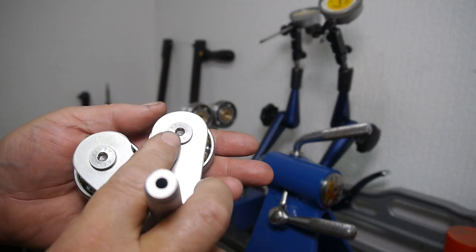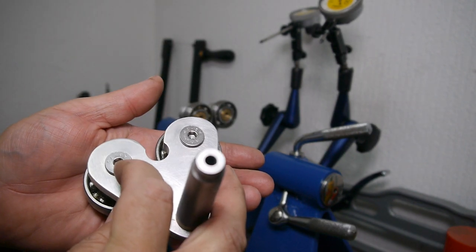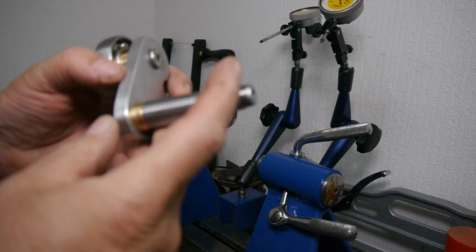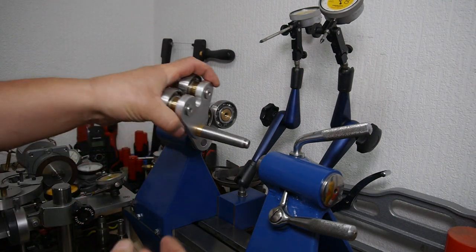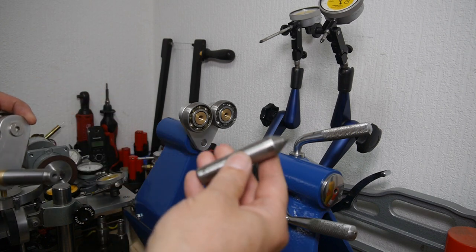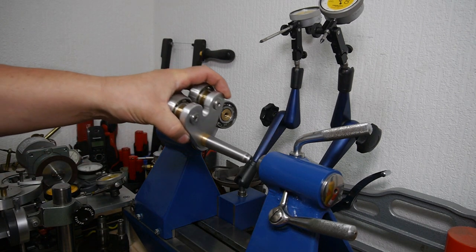Two brass axles are pressed into the center of the bearings, then two countersunk stainless screws onto the axles and a morse taper. They fit where your dead center would normally go, into the same taper.